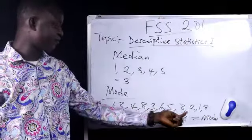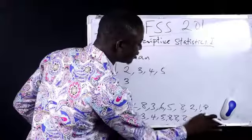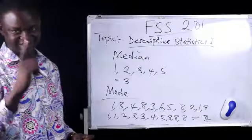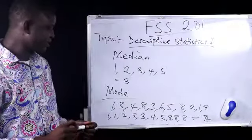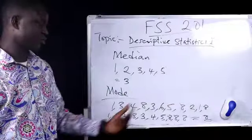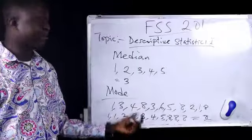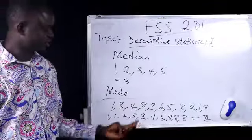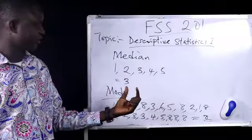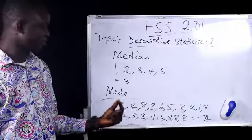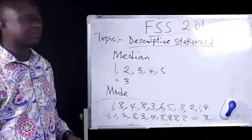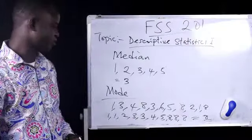And in this regard, we say we have a unimodal number. The mode here is 8. It is uni because it is single. So if the variable with the highest number of occurrence is more than 1, let's say 2, we say we have a bimodal distribution. If we have 3 variables that occur most, we say we have a tri-modal. And if they are more than 3, we say we have multimodal distribution.